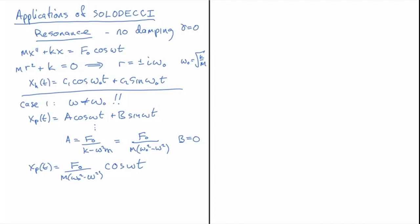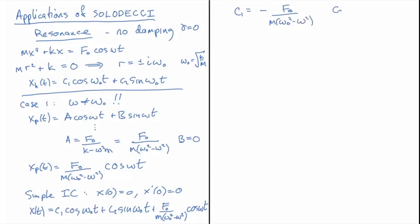So let's look at the simple initial condition. Let's say x of zero is equal to zero and x prime of zero is equal to zero. So when we do that, and I'll let you do this as an exercise, but the full x of t is equal to c1 cosine omega naught t plus c2 sine omega naught t plus F naught over m omega naught squared minus omega squared cosine omega t. And when we calculate the c1 value and c2 value for this initial condition, we find that c1 is equal to minus F naught over m omega naught squared minus omega squared and c2 is equal to zero.